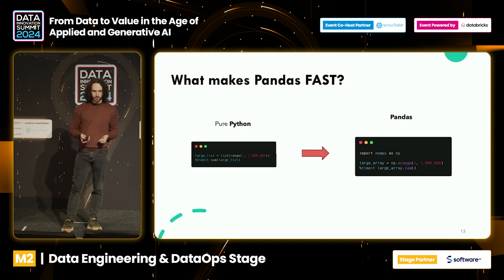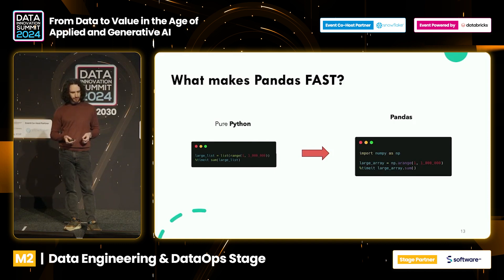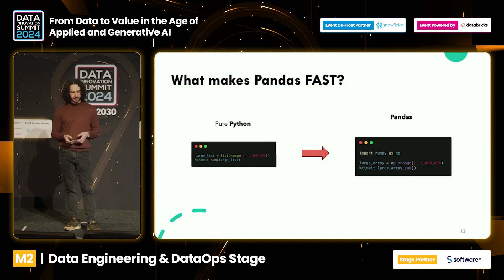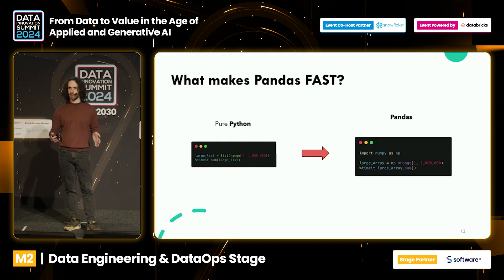One example of the magic of Pandas: if you try to create a list and time it, you will see a huge difference if you do the same operation with NumPy and apply a sum. Under the hood this has a completely different implementation because here we're using Cython and a lot of things that are optimized for these operations — compared to the other side, if we're just using plain Python.